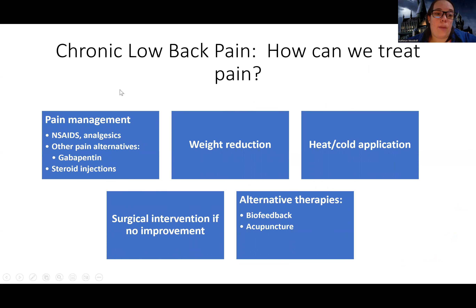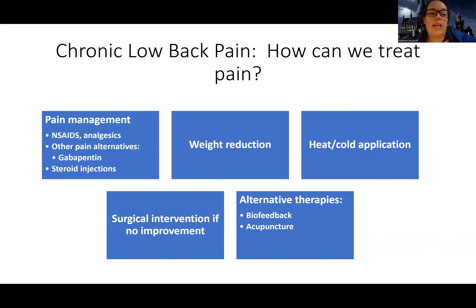We treat their pain starting with the least invasive first. We do things like NSAIDs, and we might use other analgesics like opioids. Other pain alternatives include muscle relaxers, gabapentin — which is a nerve pain medicine — and different types of antidepressants, which can also help with nerve pain. We can also do steroid injections, which can provide a lot of pain relief so they may not need as much regular around-the-clock medication. Steroid injections don't last forever, but they can get them at least a few times. Weight reduction helps anything we can do to decrease the strain on the back.